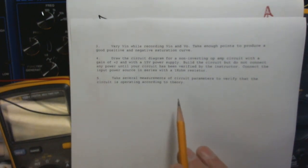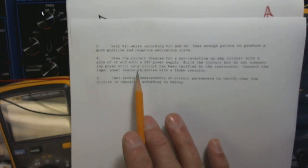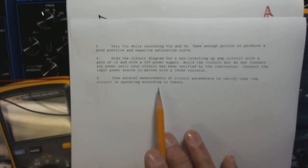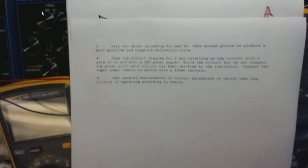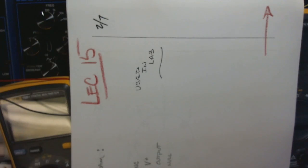With the non-inverting circuit, we're going to take several measurements to verify its performance — namely produce a saturation curve. For both saturation curves, I'll take a few points on camera to show you what's going on, and then do the remaining points off camera and give you that data. So that's the procedure — let's look at some background information.